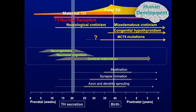The reason why in myxedematous cretinism or in congenital hypothyroidism compared with neurological cretinism there is no strong neurological impairment is probably because maternal thyroid hormone protects the brain from neural lesions. The main defects observed after birth in myxedematous cretinism or congenital hypothyroidism refer to general hypothyroidism. Recently, there is another syndrome thought to be due to deficient thyroid hormone action in the brain during development: MCT8 mutations. Probably the brain lesion in MCT8 mutations also occurs during prenatal life.